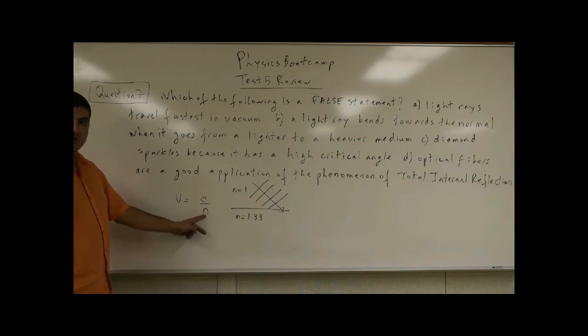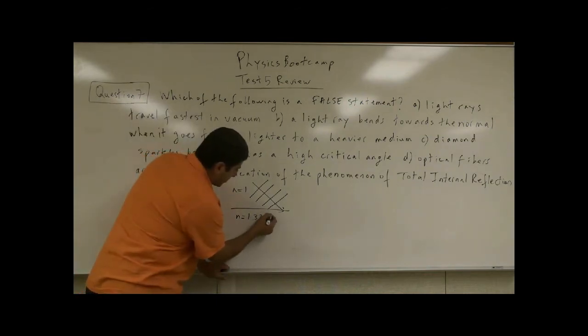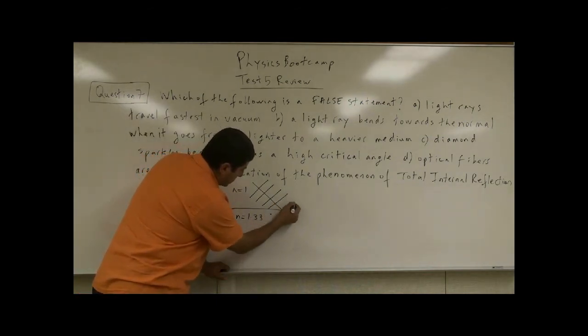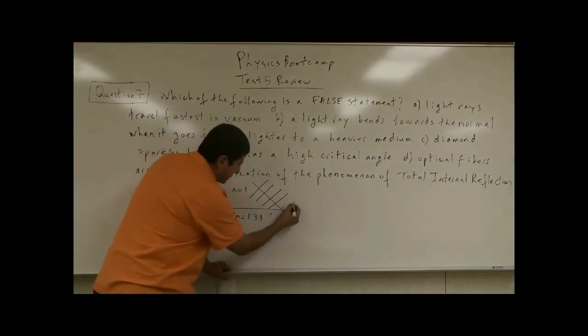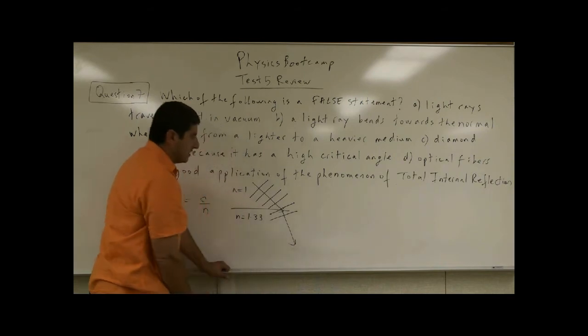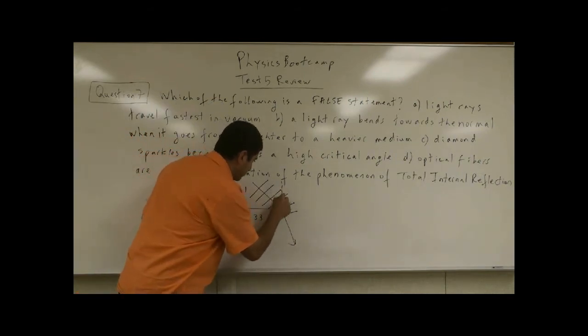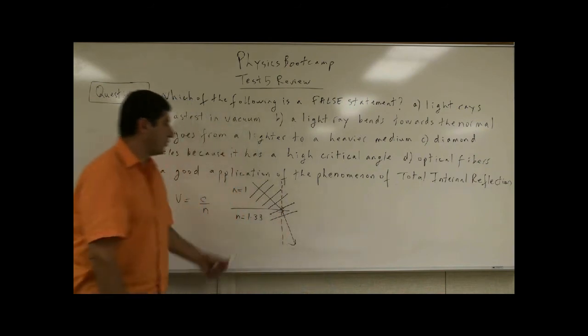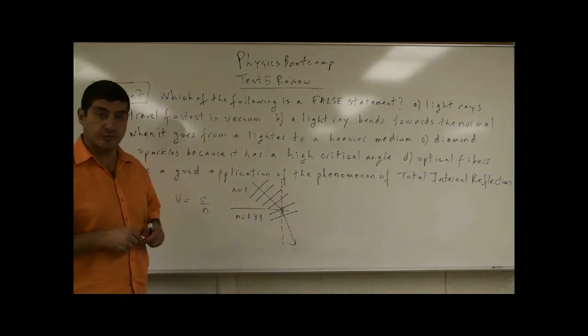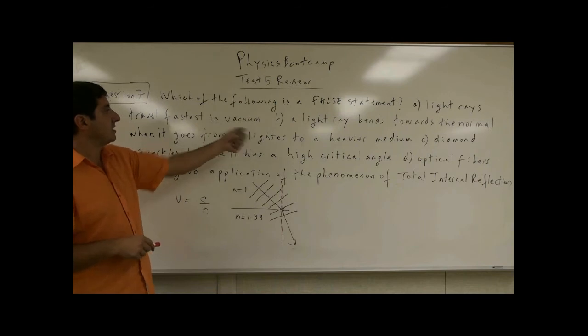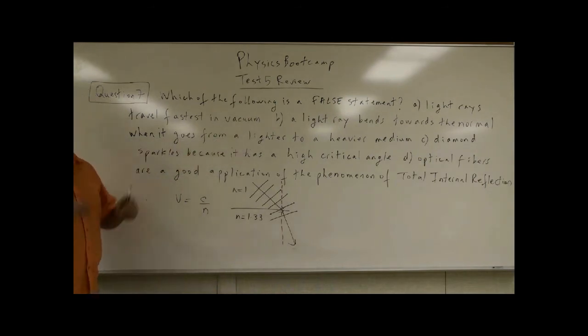If it slows down, it travels less than this part of the wavefront. So then draw the wavefront—it goes this way. So then draw the normal line, and therefore it bends towards the normal, right? B: light ray bends towards the normal—so it's true.